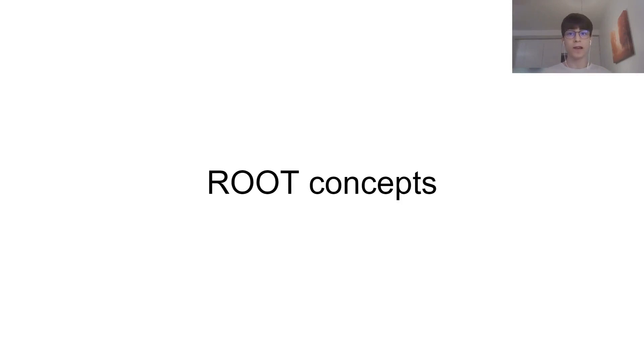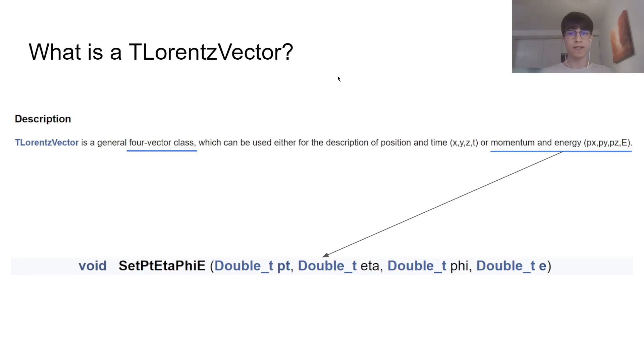Before we delve into the notebook, let's look at some of the syntax and concepts used in our upcoming coded data analysis. To declare the four-momentum of our decay particles, we are going to use the TLorentzVector class in PyRoot. It is a general four-vector class, which can be used either for the description of position and time, or, which is used in this analysis, momentum and energy.